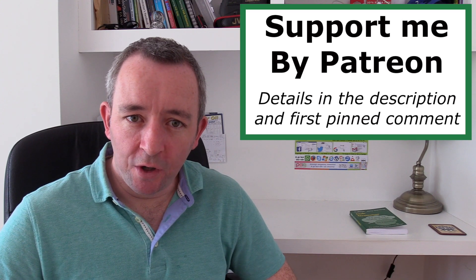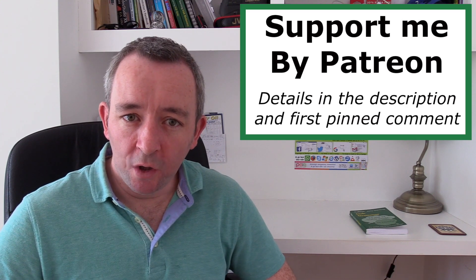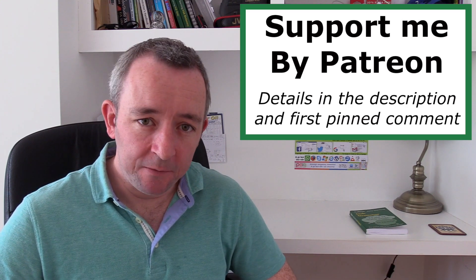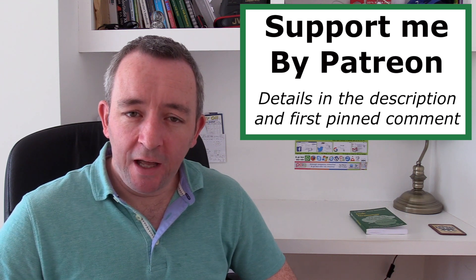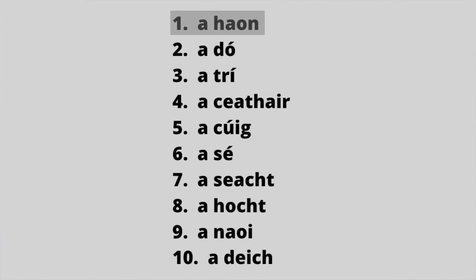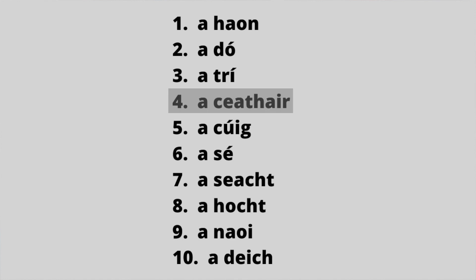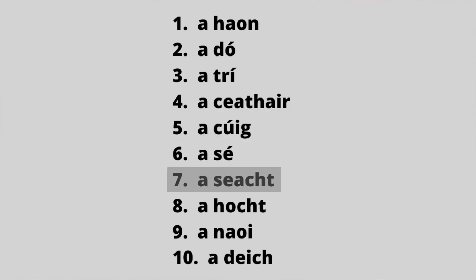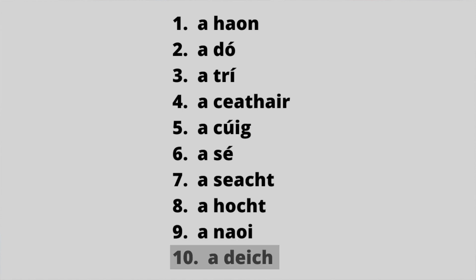Anyway, back to this video on counting nouns between one and ten. Let's look at the basic way of counting first: a haon is one, a dó is two, a trí, a ceathair, a cúig, a sé, a seacht, a hocht, a naoi, and a deich — so that's the basic way of counting one to ten.